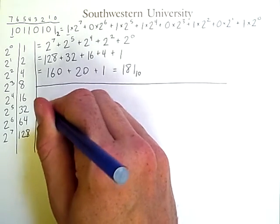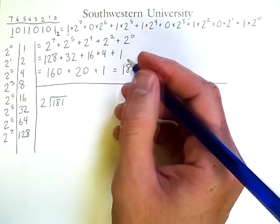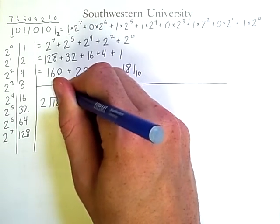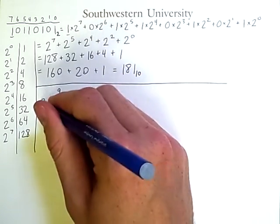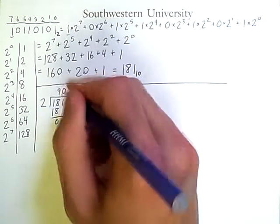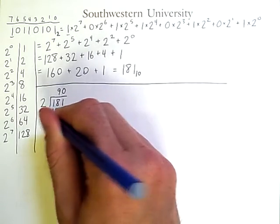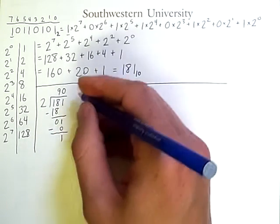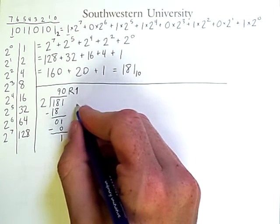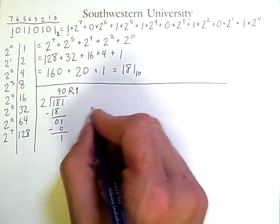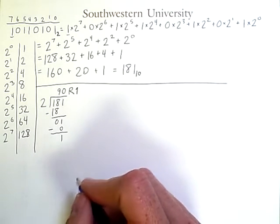So we will start with 2 divided into 181. Now we can calculate this out. 2 times 9 is 18. 0 left over. There's a 1 that comes down. How many times can 2 fit into 1? Well, it fits into it 0 times. So 2 times 0, 0. Then we subtract and we get a 1. So we have a remainder of 1. Now these remainders will be very important. We're going to accumulate several remainders throughout a series of division operations. And at the end, we're going to use them to reconstruct the binary number.